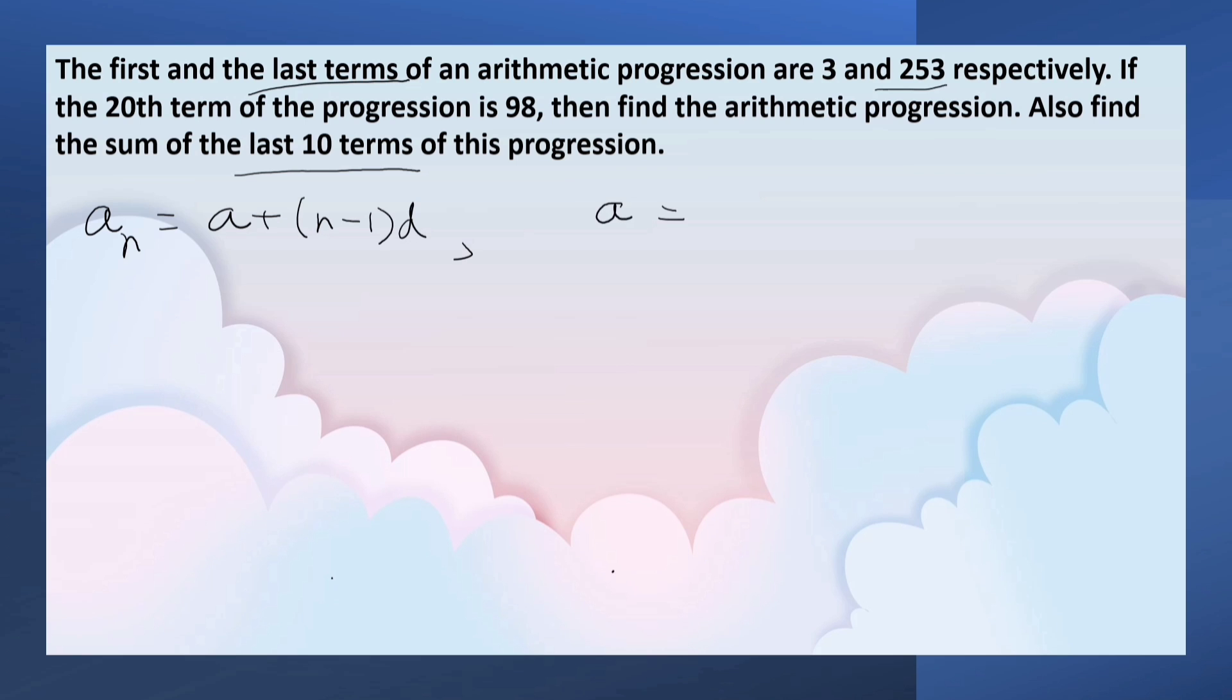Here A equals 3, AN equals 253, and D equals 5 which we just found. Now let's substitute the values. 253 equals 3 plus N minus 1, where N is what we have to find out, times 5.